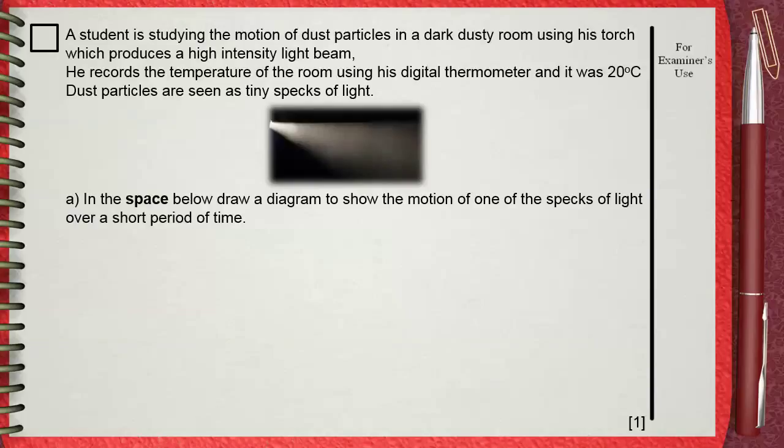A student is studying the motion of dust particles in a dark dusty room using his torch which produces a high-intensity light beam. He records the temperature of the room using his digital thermometer, and it was 20 degrees Celsius. Dust particles are seen as tiny specks of light.